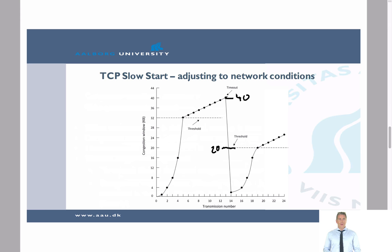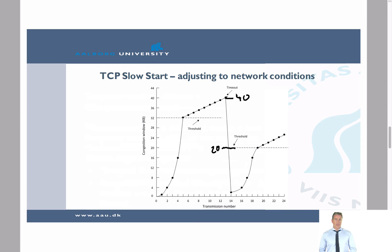When a timeout occurs, we redefine the threshold to be half the value at the timeout — in this case, 20 — and reset the congestion window to 1. Starting from transmission 14, we ramp up again: 1, 2, 4, 8 segments until reaching the threshold, then linear growth again until the next timeout, at which point we reset again.